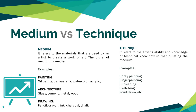And then we have technique, which refers to the artist's ability and knowledge or technical know-how in manipulating the medium. This is the manner by which the artist controls the medium to achieve the desired effect. This is the way to separate one artist from another. Of course, if you're two painters, your technique is what will separate the two of you.